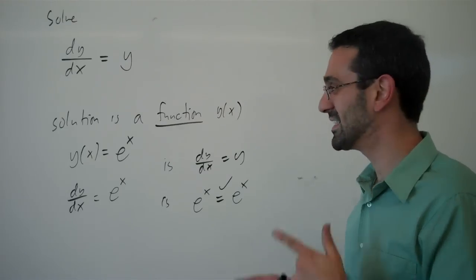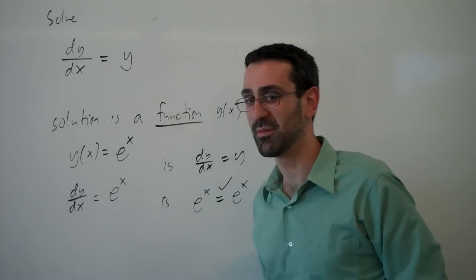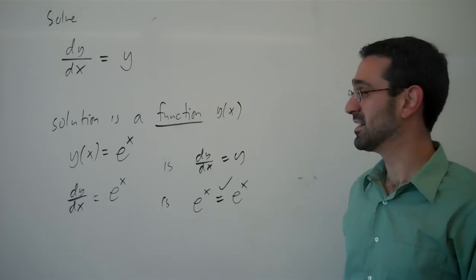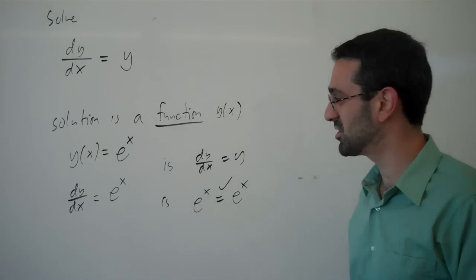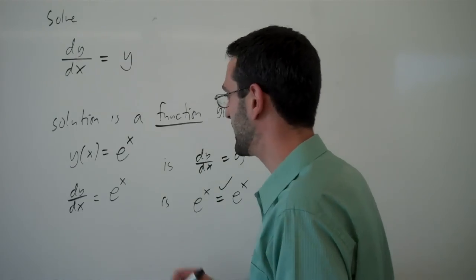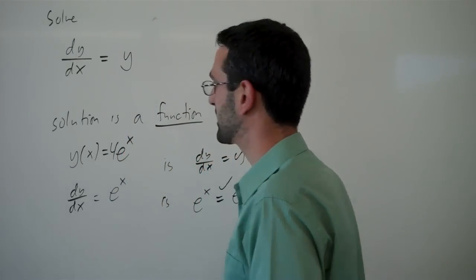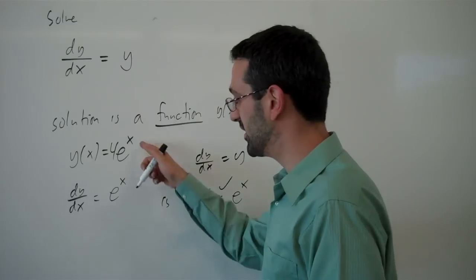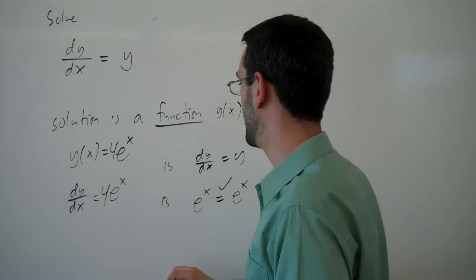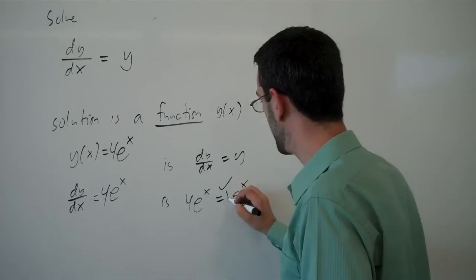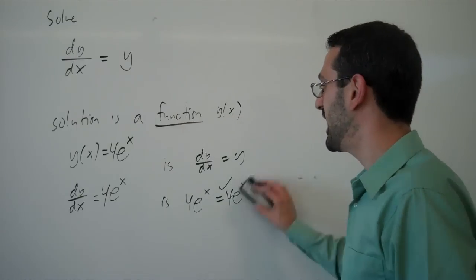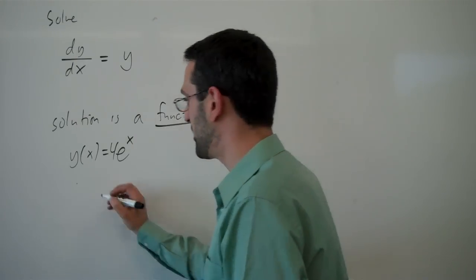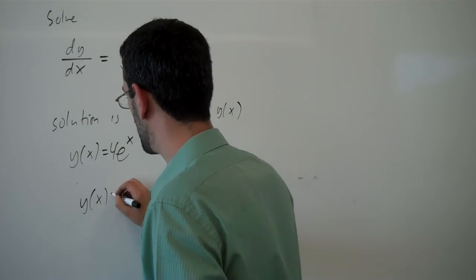Now, a good question to ask is, is it the only solution? And what do you think? In this case, no, it's not. There are more solutions, one of which would be something like 4e^x. Because the derivative would be 4e^x, and 4e^x equals 4e^x. So, that's also a solution. And, in fact, in this case, we end up getting a whole family of solutions.